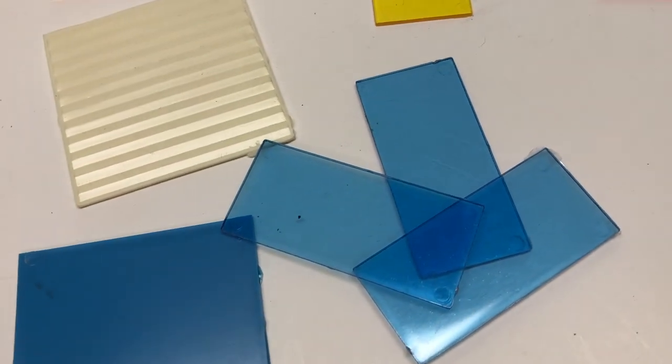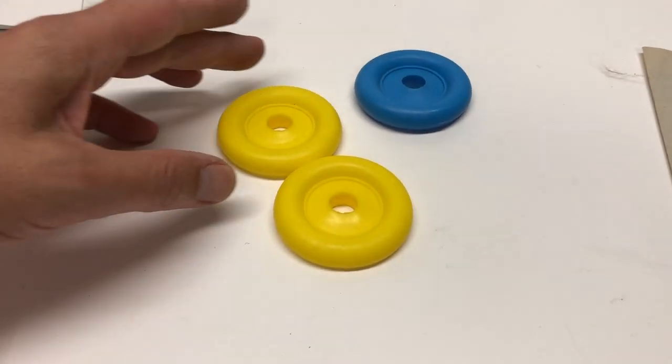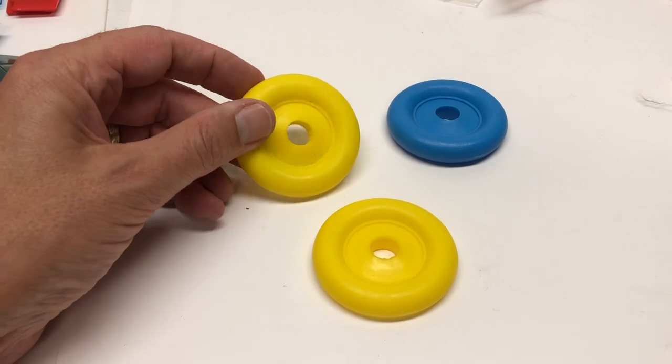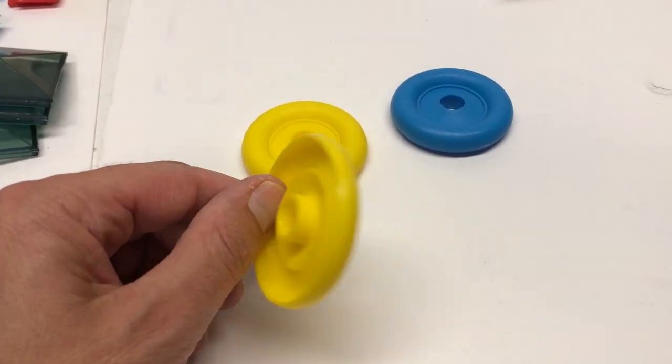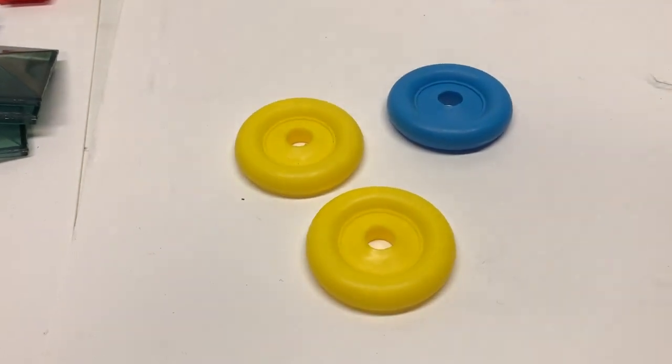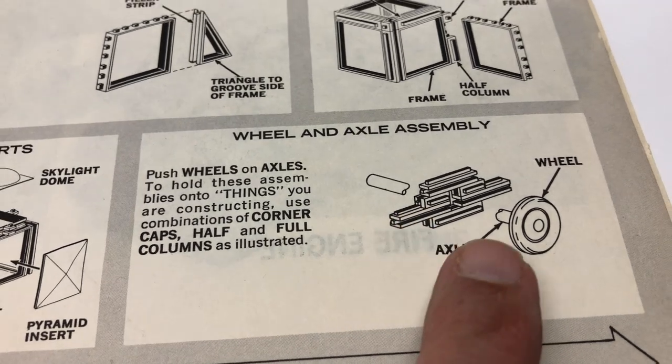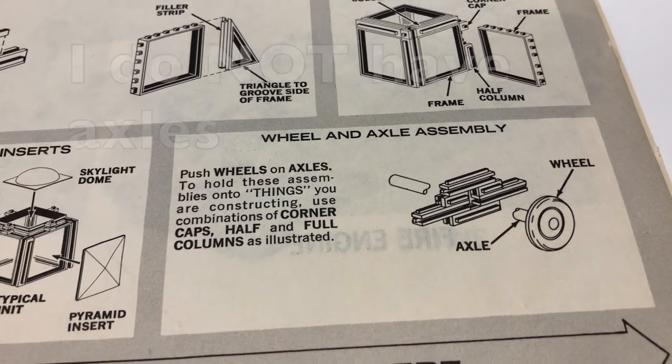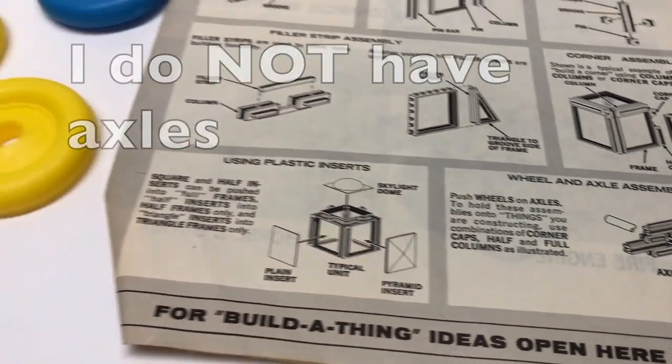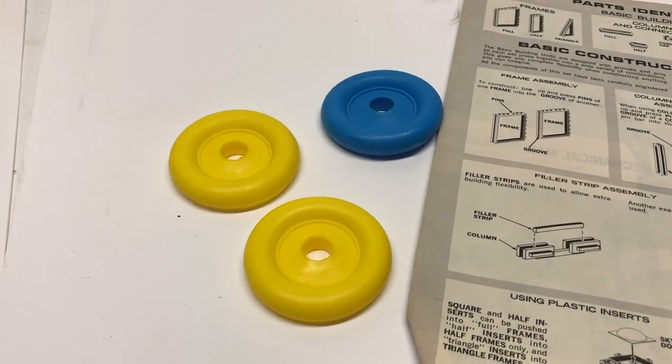They do have some specialty pieces, like these wheels. And unfortunately, I only have three, so I'm obviously just making a tricycle. Based on the instructions, I should have some kind of axle, and I don't believe I have that whatsoever. So that's unfortunately missing, so I won't even be able to do the tricycle.